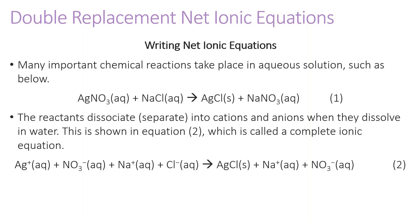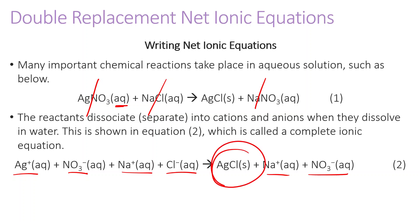Notice that AgNO3 is aqueous. So what this really means is that the silver and the nitrate ions are separated in water. Same thing with NaCl — these ions should be separated. Same thing with NaNO3 — these ions are just separated. We didn't separate AgCl because it's a solid. These guys have reacted together and formed a new compound. These ions are not floating around in the water.